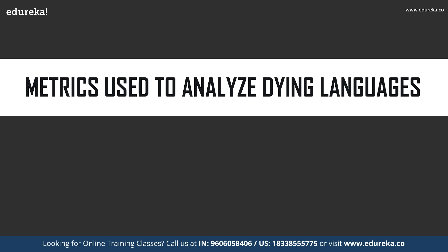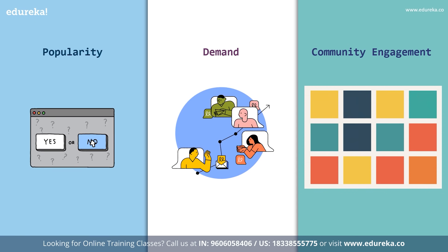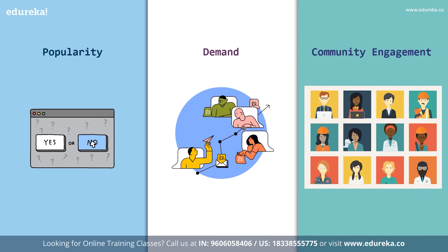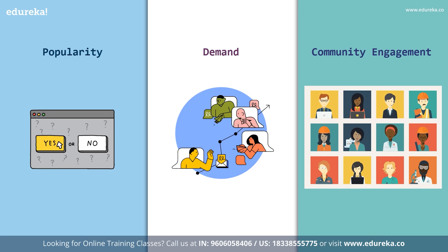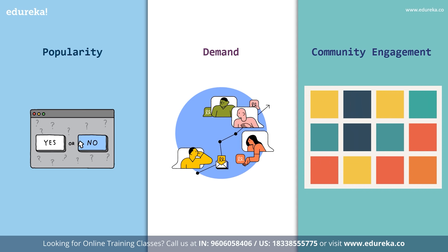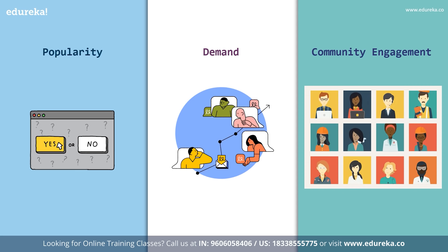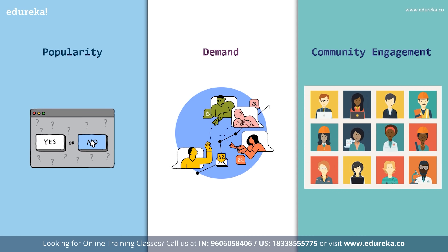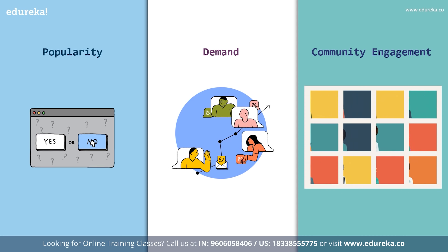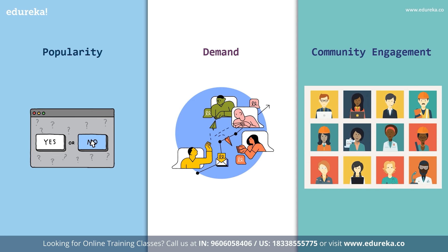To better understand the trade-offs involved in making such a decision, we define and compute three factors of programming languages through online collaboration platforms. For our analysis, we look at data from GitHub and Stack Overflow, two of the most popular programming communities. Data gathered from this platform is suitable for measuring the popularity of languages and availability or demand of developers. Stack Overflow is a popular online programming question-and-answer community, providing its participants with rapid access to knowledge and expertise of their peers. We combine the data gathered from the two sources to compute the metrics of popularity, demand, and community engagement.